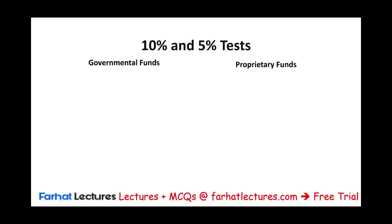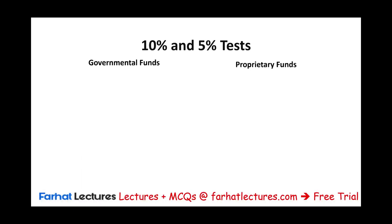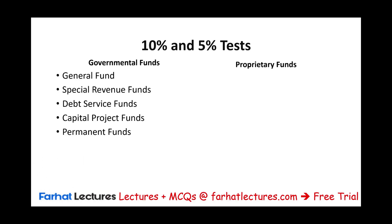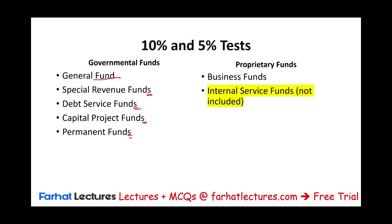Let's make sure we understand the different funds. We have governmental funds, which are the general fund (only one), special revenue funds, debt service funds, capital project funds, and permanent funds. Then we have proprietary funds, which include enterprise funds — the business funds — which can have many funds, and the internal service fund.